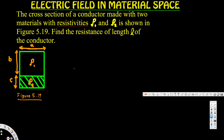This question asks about the cross section of a conductor made with two materials with resistivities rho 1 and rho 2, as shown in figure 5.19. Find the resistance of length l of the conductor.